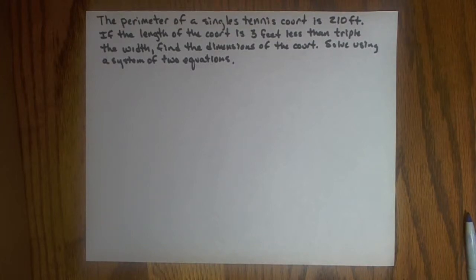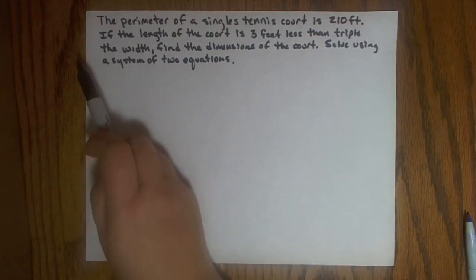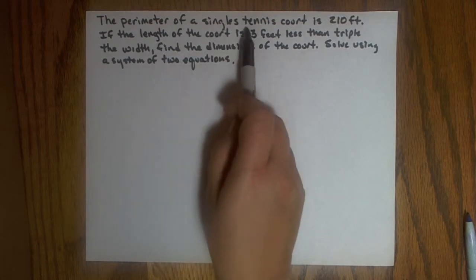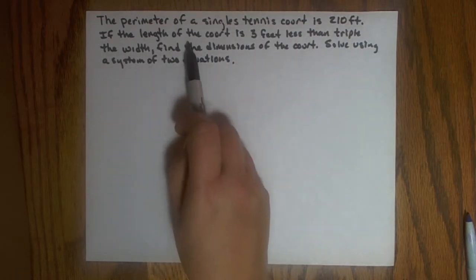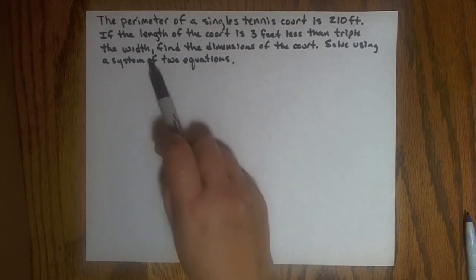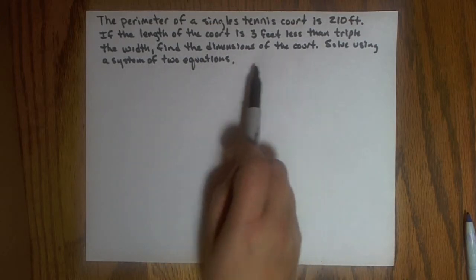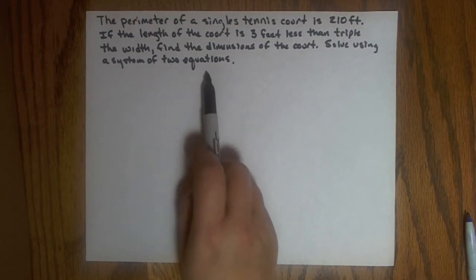In this example, we're going to solve a story problem and go through the steps needed to solve the problem. The problem reads, the perimeter of a singles tennis court is 210 feet. If the length of the court is 3 feet less than triple the width, find the dimensions of the court. Solve using a system of two equations.